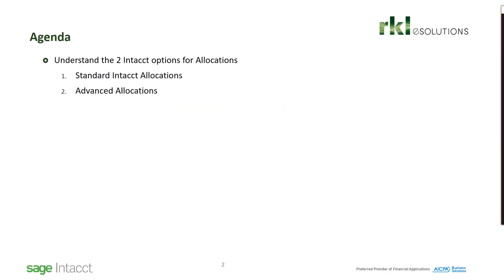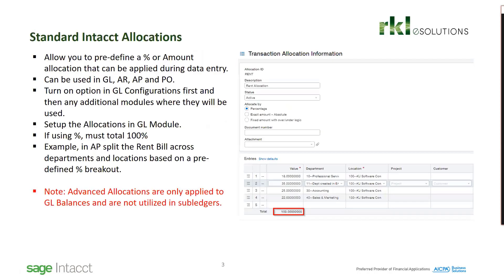First, I want to understand the two different types of allocations available in Sage Intact. The standard Intact allocations come out of the box, and the advanced allocations are available for purchase. The standard Intact allocations allow you to pre-define a percentage or amount, and it can be applied during data entry. It can be used in general ledger, accounts receivable, accounts payable, and on purchase orders. This works great if you have pre-defined allocations that will not change often.